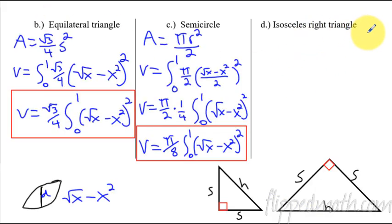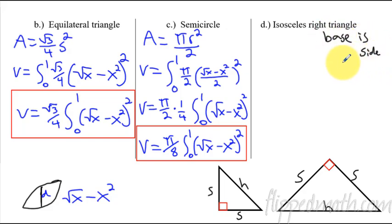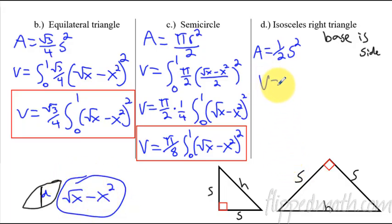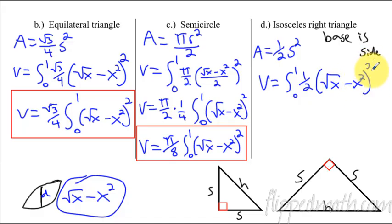For this problem, the base of the triangle is the side. The area of an isosceles right triangle is one half S squared — it's half a square, which makes sense. We know the side is square root of x minus x squared. So volume equals the integral from 0 to 1 of one half times (square root of x minus x squared) quantity squared. I could bring that one half to the front, but that is going to be the volume.